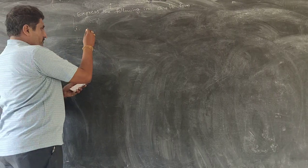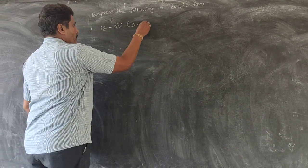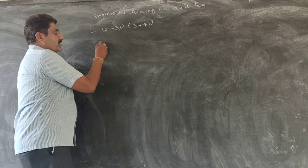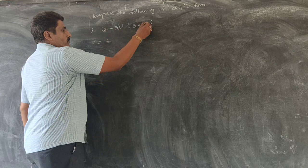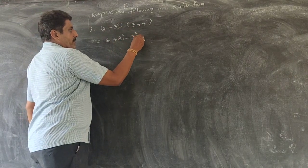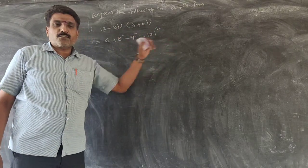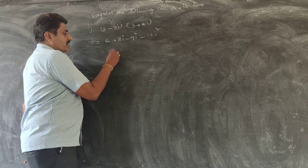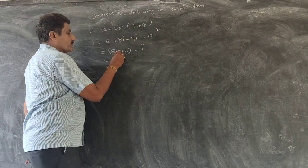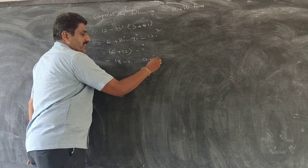Number 1: suppose (2 minus πi) into (3 plus 4i). It is multiplication of 2 complex numbers. So we get 6 plus 8i minus 9i minus 12i squared. But we know i squared is equal to minus 1, so it becomes 6 plus 12 minus i, that equals 18 minus i. This is in the form of A plus iB.